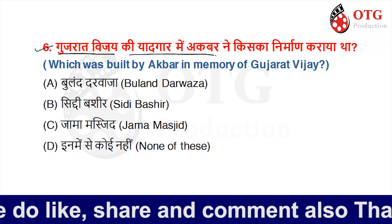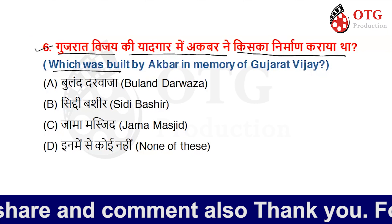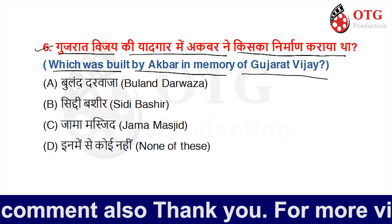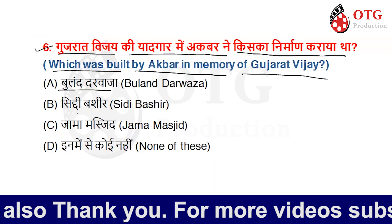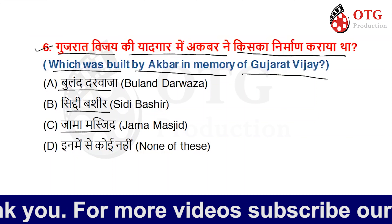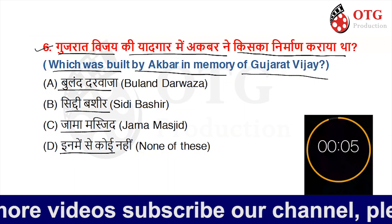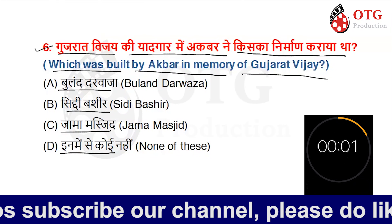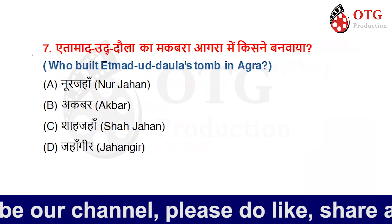Which monument was built by Akbar in memory of Gujarat Vijay? Option A is Buland Darwaza, Option B is Sidi Bashir, Option C is Jama Masjid, and Option D is none of these. Your time starts now. The right answer is Buland Darwaza.